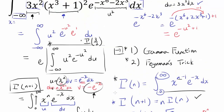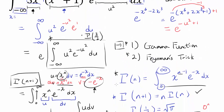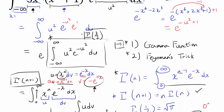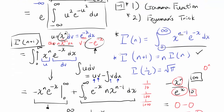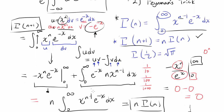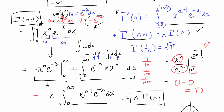For those experienced with gamma function, as soon as you realize this is γ(3/2), you can immediately say γ(3/2) = √π/2 and be done. But this video is intended for those who have never seen gamma function before, so I'll take more steps to introduce some properties and prove them before using them.